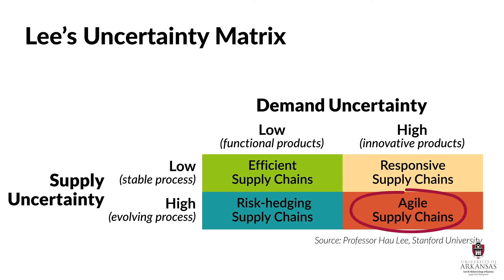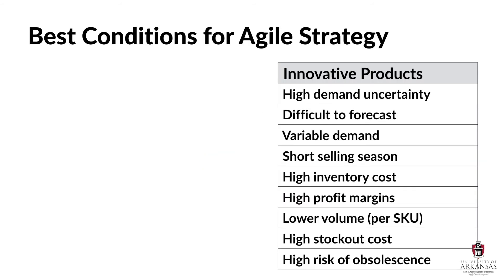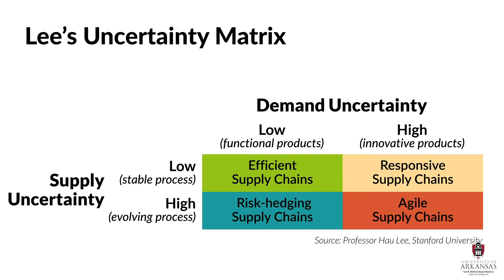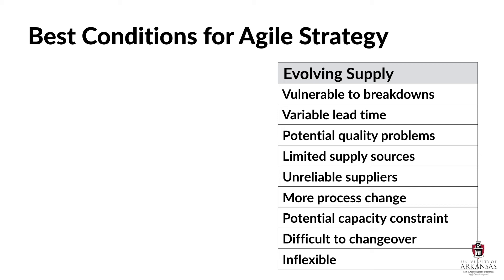Professor Lee's matrix tells us an agile strategy is appropriate when demand uncertainty is high and supply uncertainty is high. More specifically, that means we have innovative demand characteristics where products are difficult to forecast and have highly variable demand patterns and short selling seasons. Innovative items are typically high cost with higher profit margins but lower sales volumes per SKU. Therefore, these items have higher stockout costs, meaning we lose a lot of margin if they're not available when customers want them. But these items also have higher obsolescence costs, meaning these are really expensive to hold and they go out of style quickly. Professor Lee's uncertainty matrix also tells us that we need to consider supply characteristics. More specifically, an agile strategy is typically used with evolving or uncertain supply bases that are vulnerable to breakdowns or have inconsistent lead times.